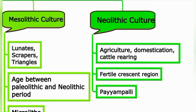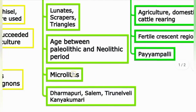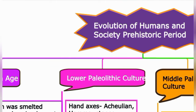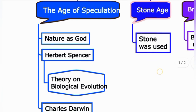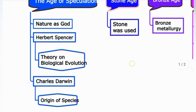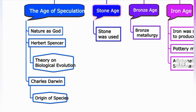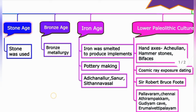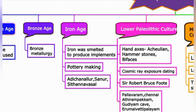The overall lesson is now over. Here is the mind map for Evolution of Humans and Society, Prehistoric Period. First: the Age of Speculation — Nature as God, Herbert Spencer's theory on biological evolution, Charles Darwin's Origin of Species. Then the Stone Age, Bronze Age, and Iron Age — iron was melted to produce implements and pottery. Evidence sites include Adichanallur, Sanur, and Sittanavasal.